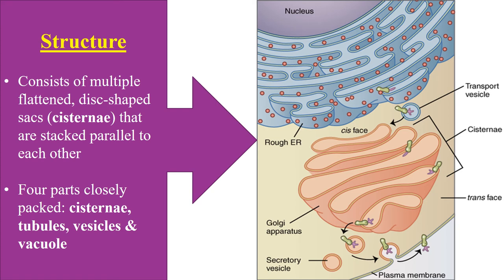The protein then travels through the organelle and undergoes further modifications. Initially when fusing with the cis face it had an elaborated carbohydrate chain, but as it passes through the cisternae of the Golgi apparatus, some sugar chains are removed and new ones are added. Once modification is complete, the protein is packed into a vesicle and leaves through the trans face. These vesicles either deliver their content to intracellular locations or fuse with the plasma membrane to deliver the protein outside.